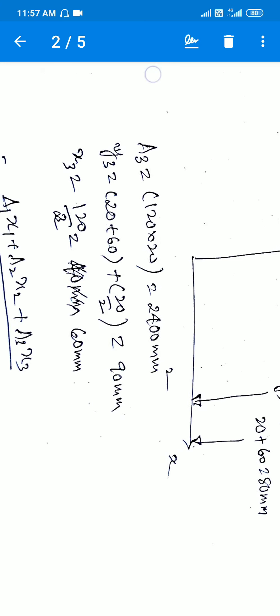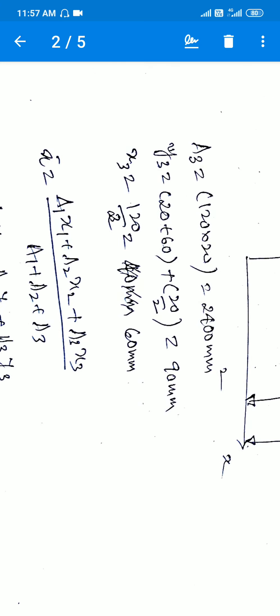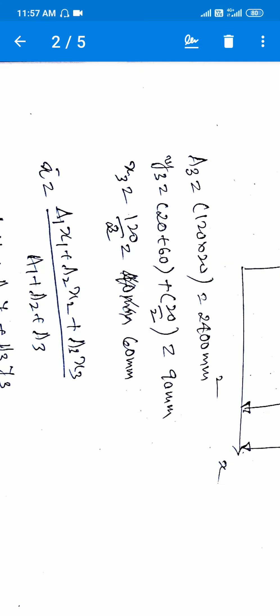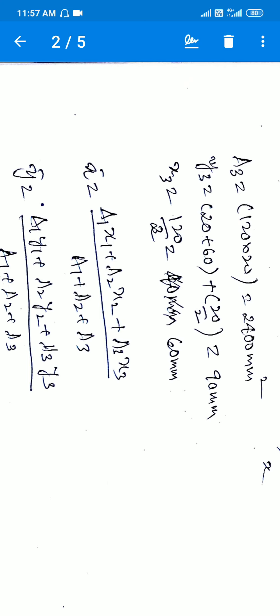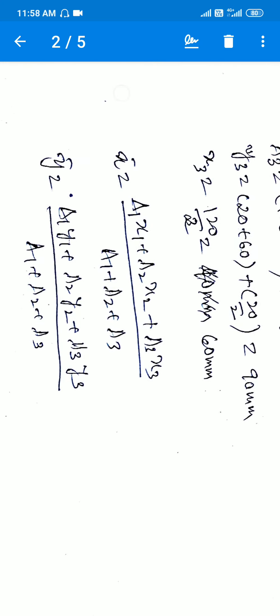Finally, we calculate using the general centroid equation. For three elements: x̄ = (A1·x1 + A2·x2 + A3·x3) / (A1 + A2 + A3). Similarly, ȳ = (A1·y1 + A2·y2 + A3·y3) / (A1 + A2 + A3).